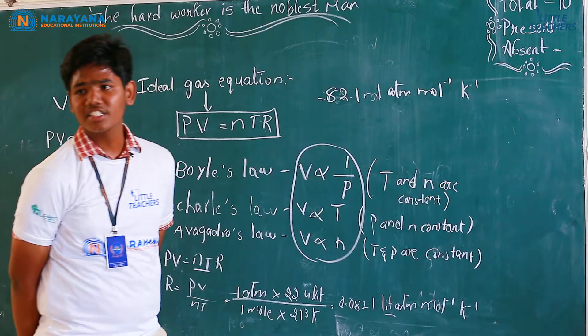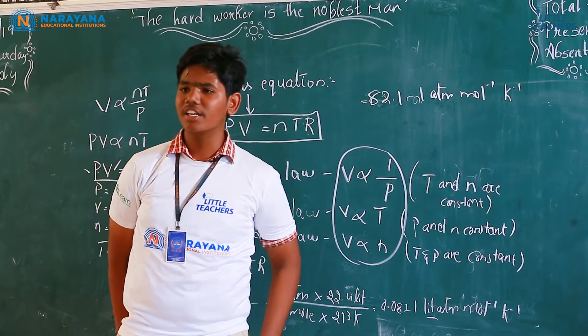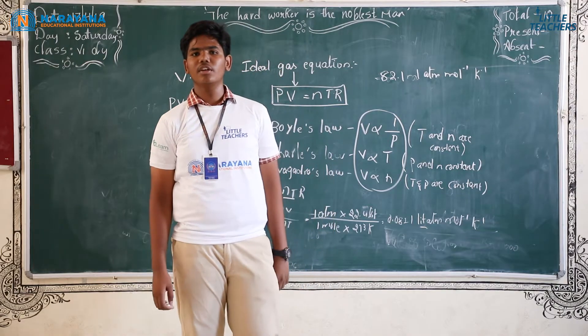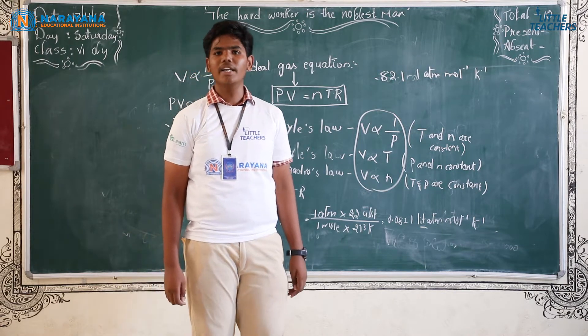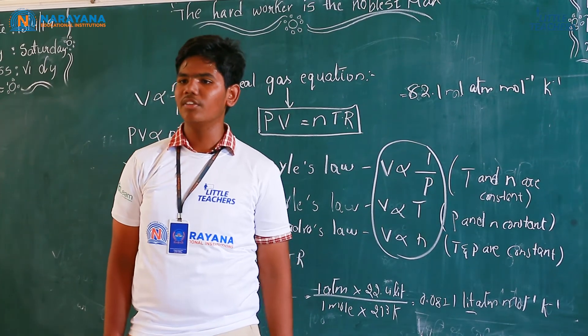But, coming to the CS and SI system, the value of R is equals to 8.314 into 10 to the power minus 7 mole inverse Kelvin inverse.